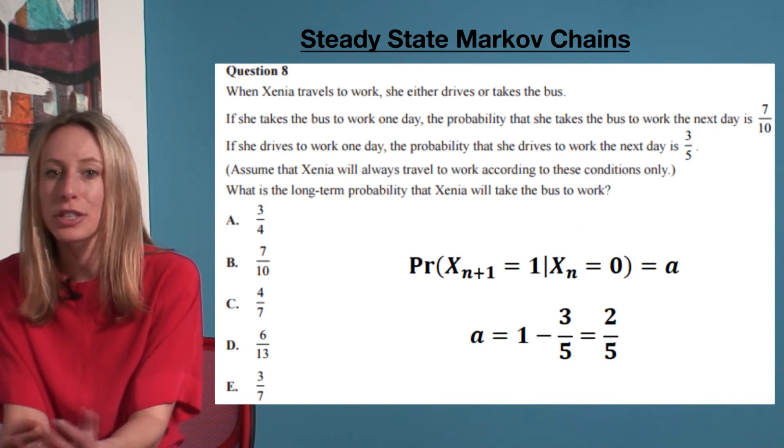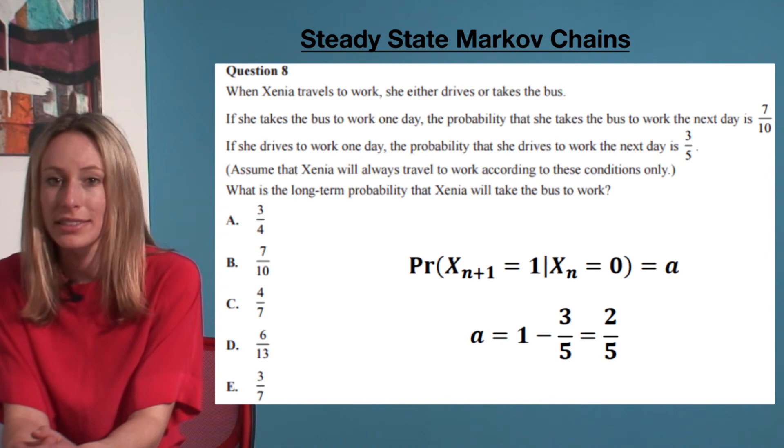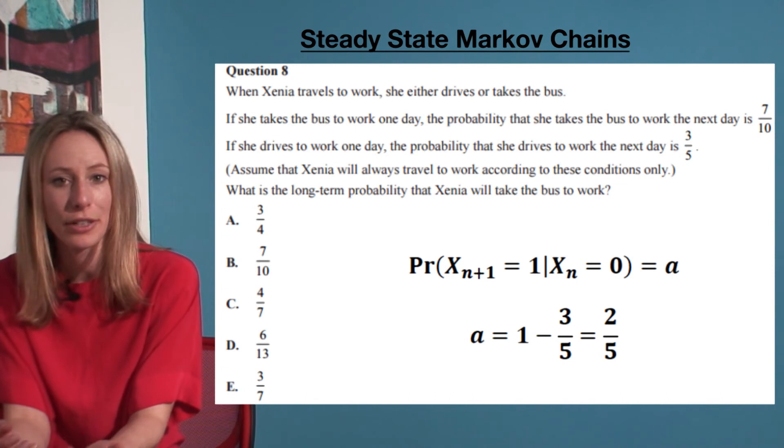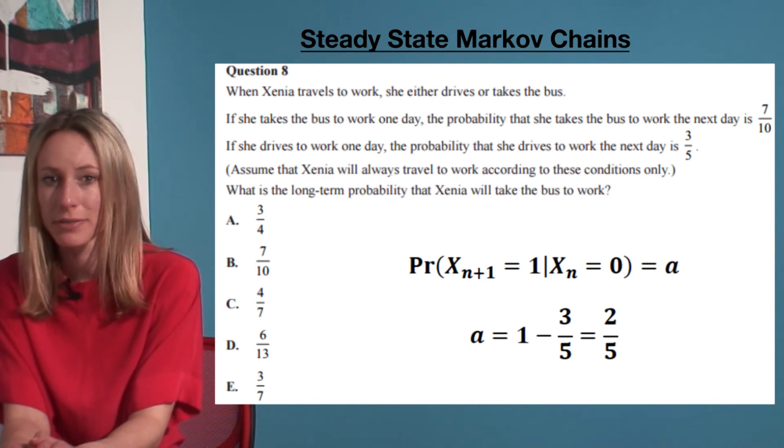a equals the probability that she takes the bus (state one) given that she drove the day before (state zero), which is 1 minus 3/5, which equals 2/5.